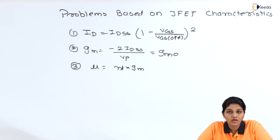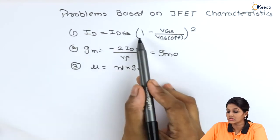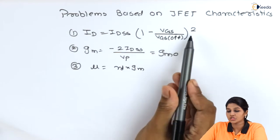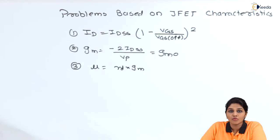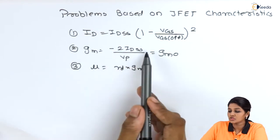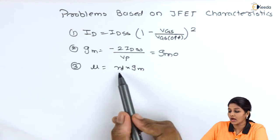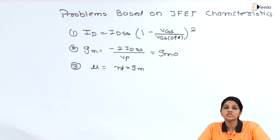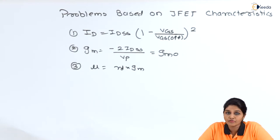The formula for drain current ID is: ID = IDSS × (1 − VGS/VP)². The transconductance GMO is obtained using the formula: GMO = −2·IDSS / VP. The amplification factor is obtained using: μ = Rd × GM. Using these formulas, we can find out the various characteristics of an N-channel or P-channel JFET.